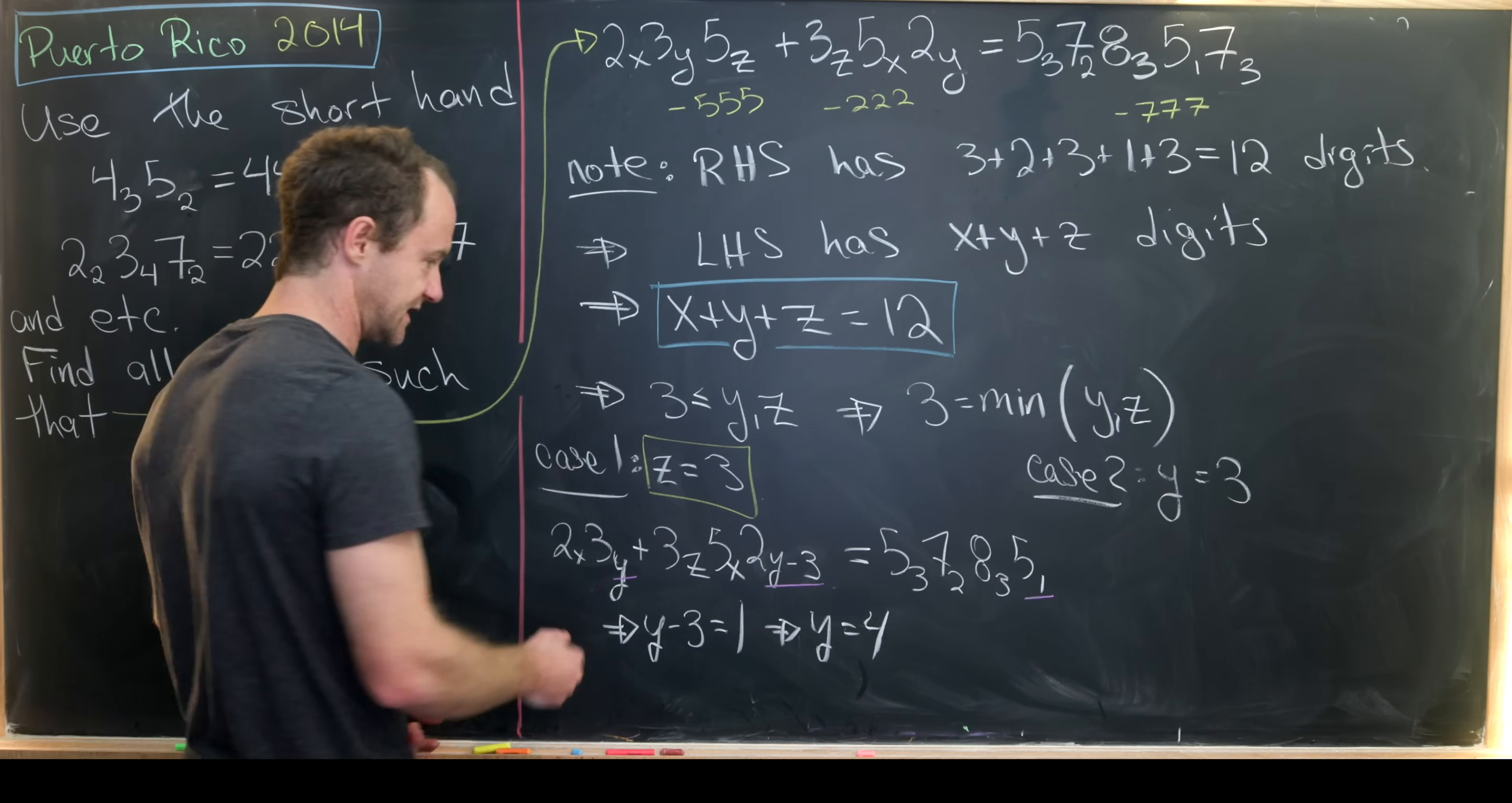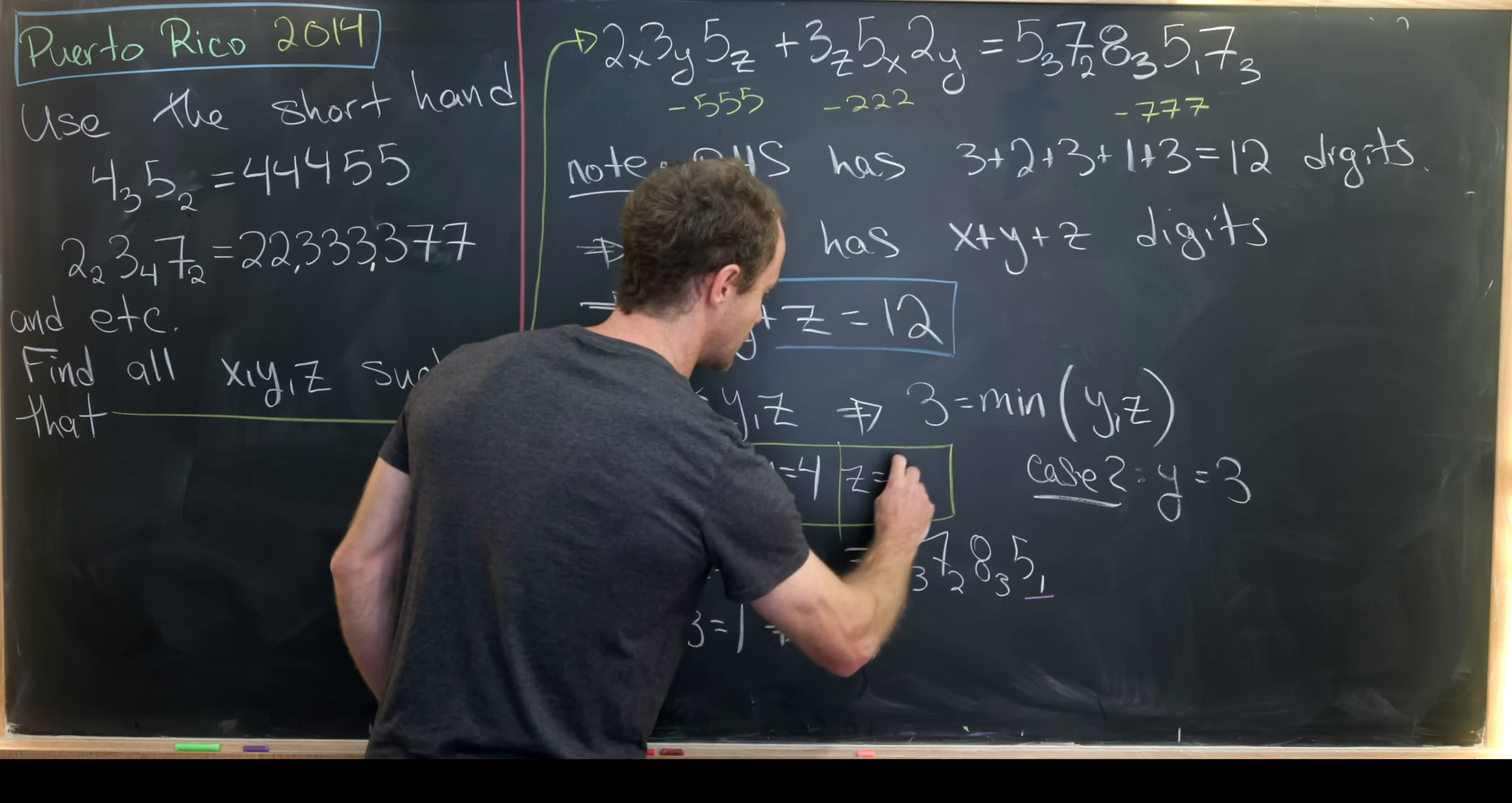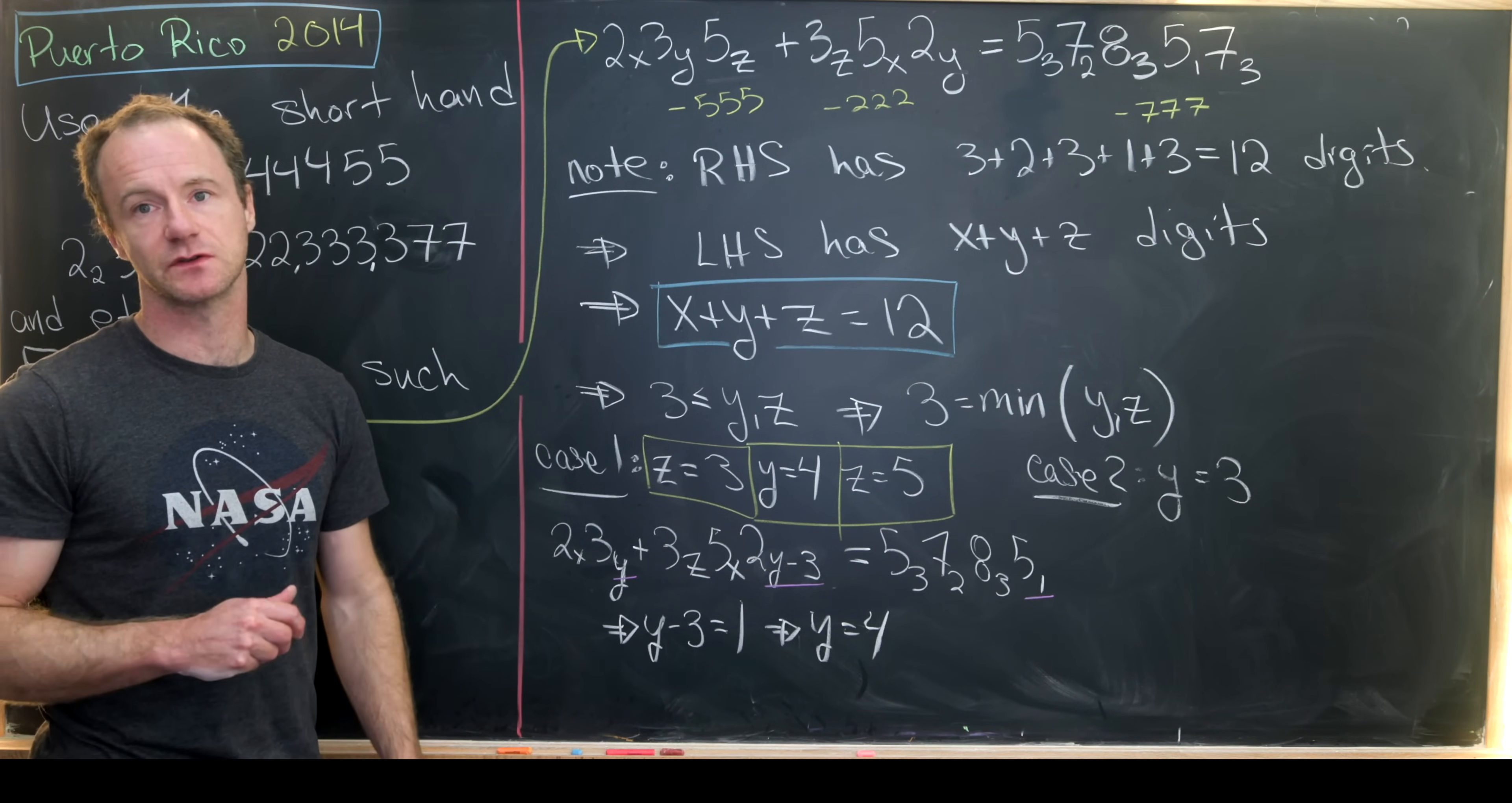If z is equal to 3, we've just determined that y is equal to 4, and then using this equation that I've boxed in blue, that means that x is equal to 5 because we need their sum to be 12. What's left is to check that this is a solution. But maybe before we check if this is a solution let's work through this second case to see if that gives us a potential solution as well.